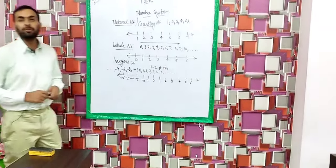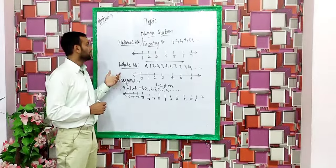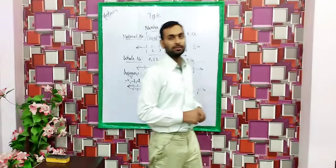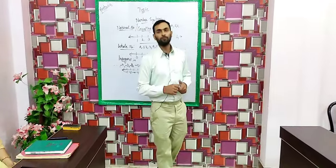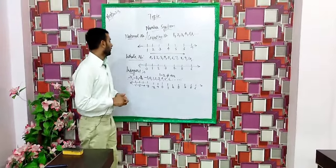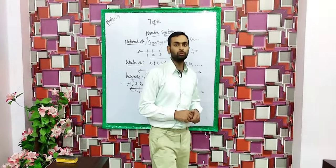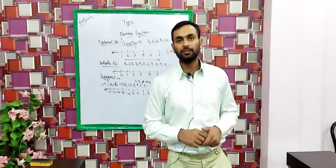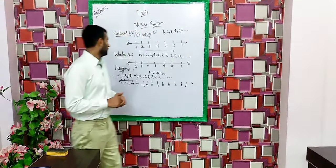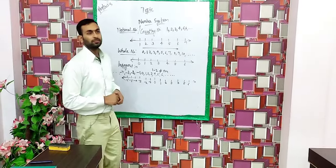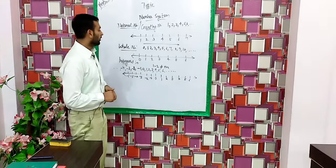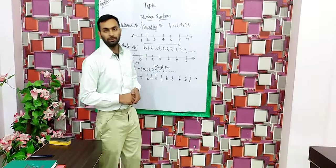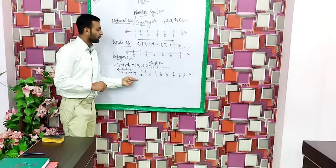Now we are discussing rational numbers. You have already learned about three number types: natural numbers, whole numbers, and integers. Natural numbers start with 1, 2, 3, 4, 5, 6 and so on. Whole numbers start with 0, 1, 2, 3, 4, 5, 6 and so on. Integers contain both positive and negative numbers including 0 — positive numbers on the right side of 0 and negative numbers on the left side. You can clearly see this indicated on the number line.